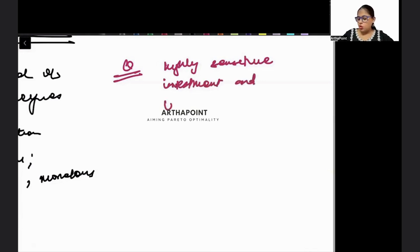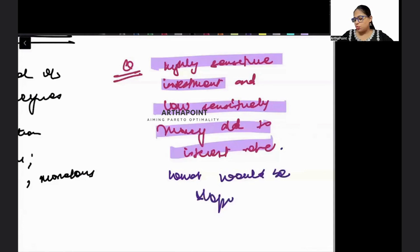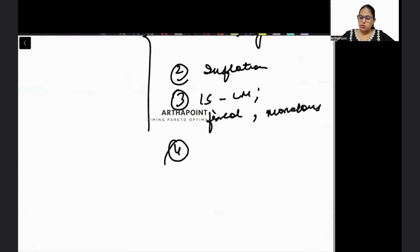For example, I give you this question that we have highly sensitive investment and low sensitive money demand to interest rate. So I'm asking you what would be the slope of IS - will it be flat, steep, horizontal, vertical? You can get these kind of questions and you have to be well aware of these kind of questions.